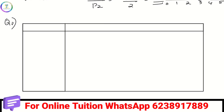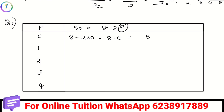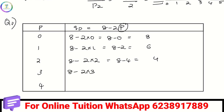We mark P values and use the equation Qd equals 8 minus 2P. For P equals 0: 8 minus 0 equals 8. For P equals 1: 8 minus 2 equals 6. For P equals 2: the value is 4. For P equals 3: 8 minus 6 equals 2. For P equals 4: 8 minus 8 equals 0.